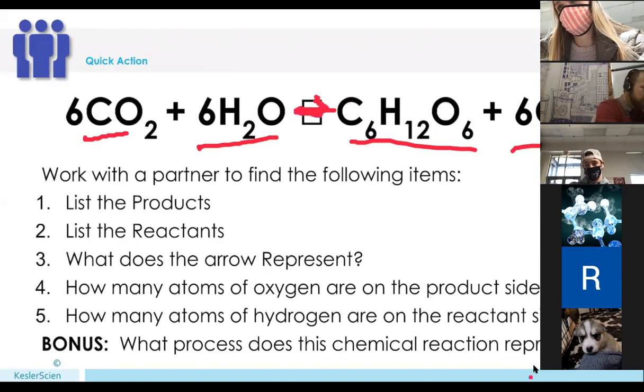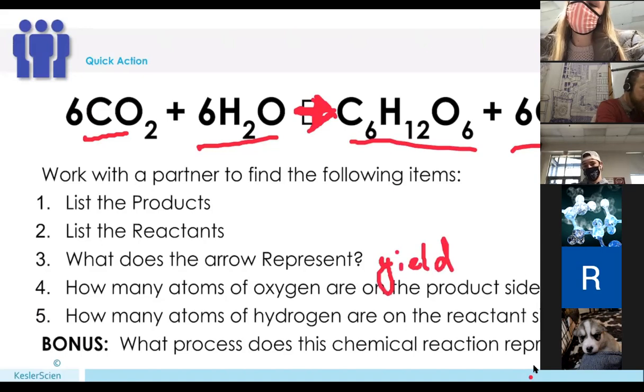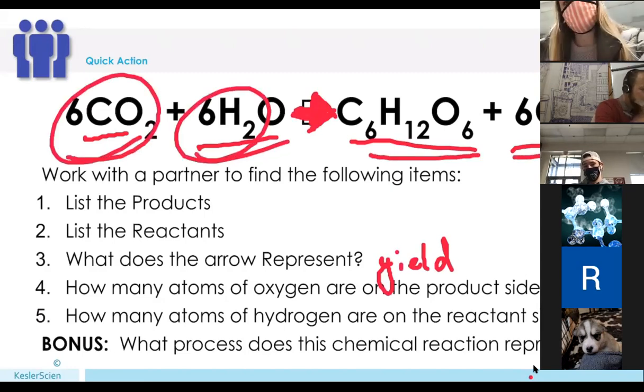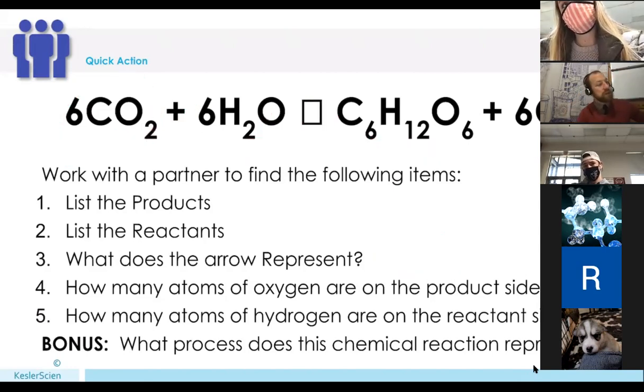This is supposed to be an arrow, but obviously it did not translate into Google Slides. That represents what this reaction is yielding. What are we making? This is like a transformation arrow. We transform the things on the left into the things on the right.